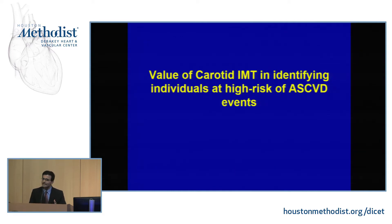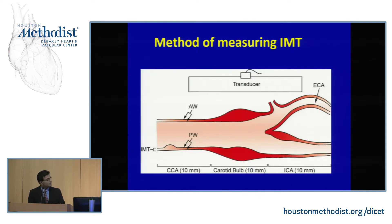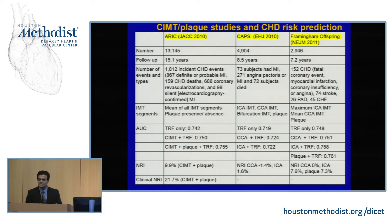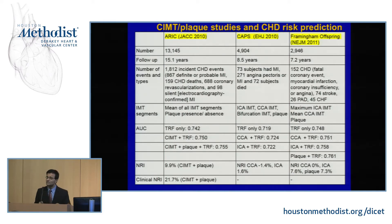First, carotid IMT. The IMT definition is the distance between the lumen-intima interface and the media-adventitia interface. This is the lumen-to-intima interface; this is the media-to-adventitia interface. You can measure it in the common carotid, at the bifurcation, or in the internal carotid. When we look at all the studies — I've put three major studies here — it is associated with a higher risk of ASCVD events. But that is not enough for a biomarker or imaging study these days. We have to show discrimination: when you add it on top of traditional risk factors, you improve the area under the ROC curve, though the increase is minimal. When you see plaque in addition to thick IMT, that adds further. It's extremely important when discussing IMT to ask whether it's IMT alone or IMT plus plaque, because it does provide further risk stratification.